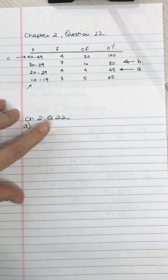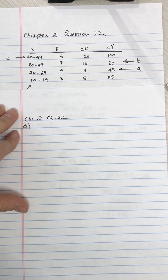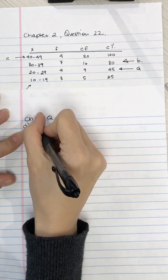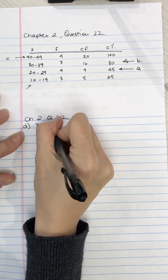So the last part of chapter 2, question 22, is D.